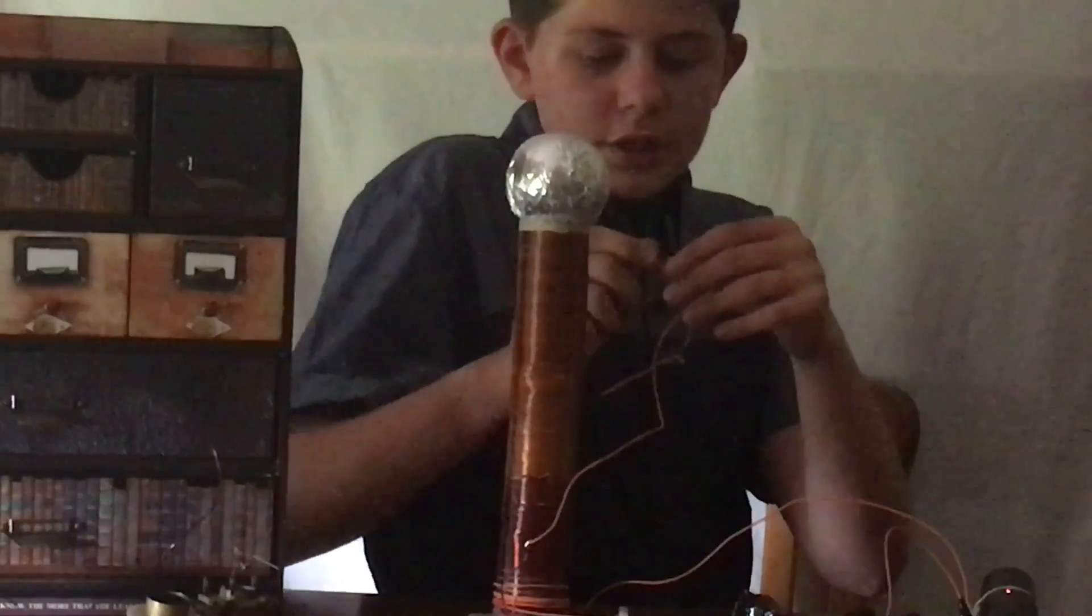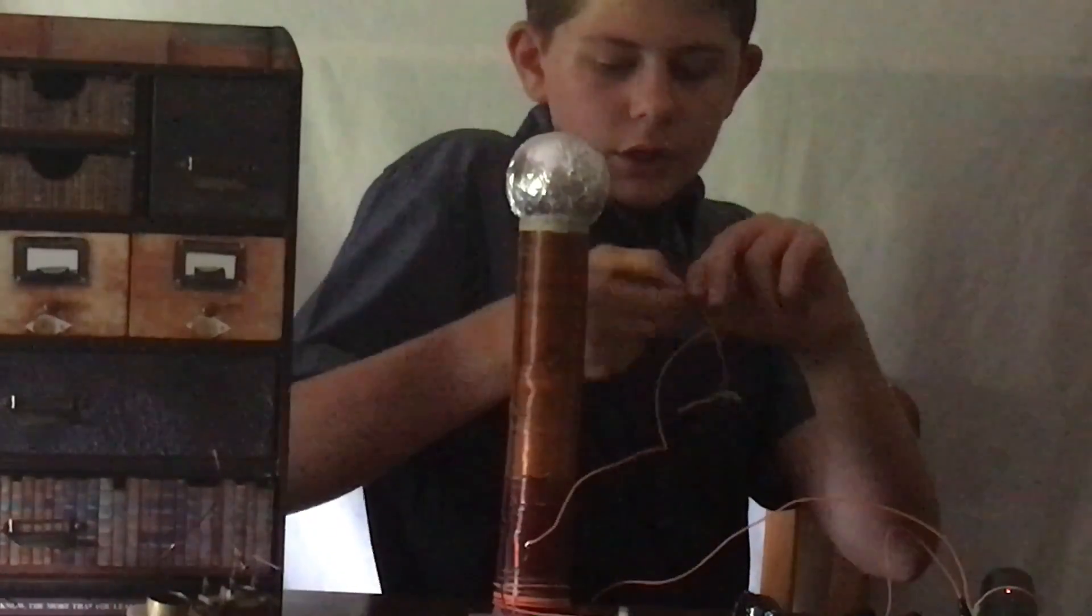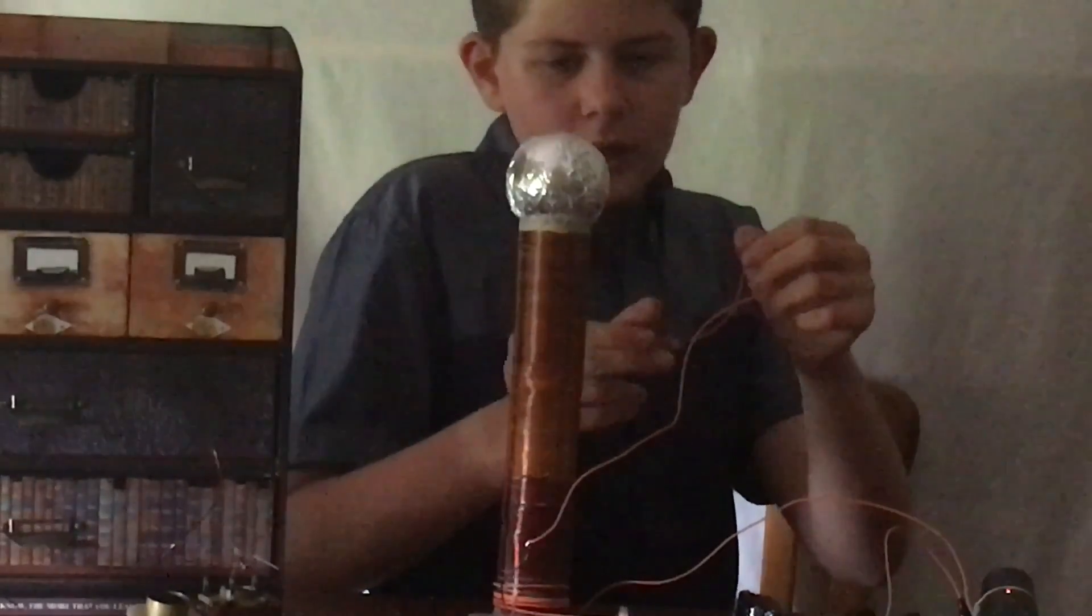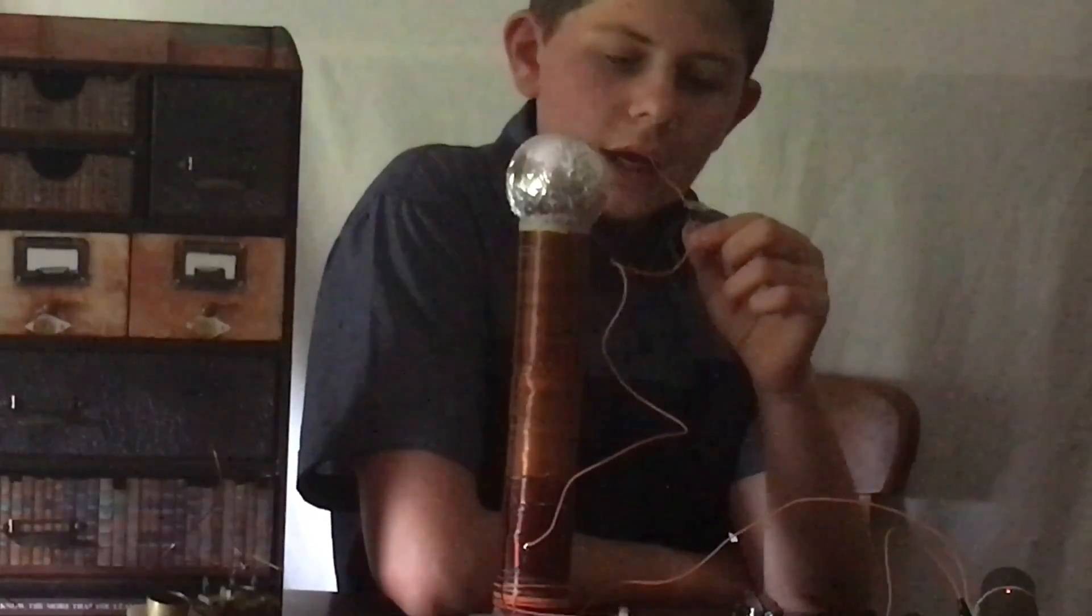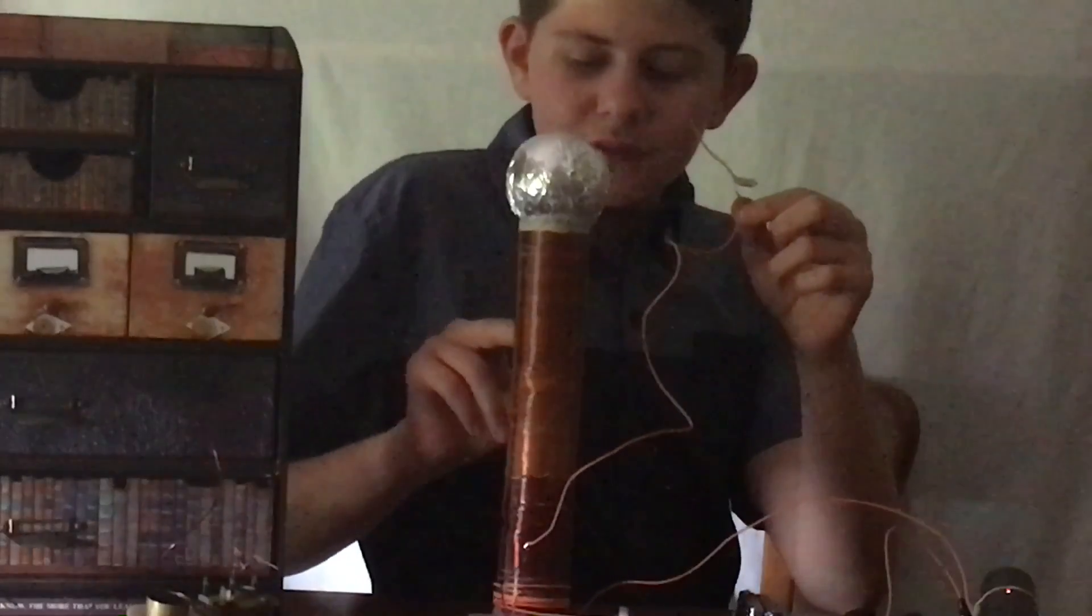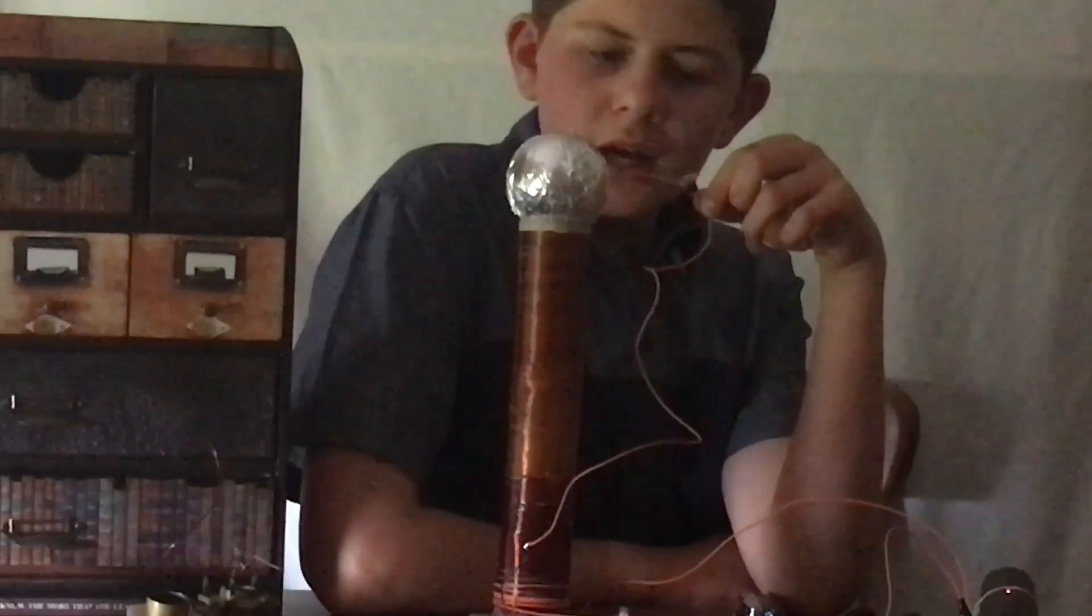Another thing you can do is if you have a little neon bulb like this one, you can twist it to the ground wire like this and touch it nearby. And at the moment, if you look closely, you can see the neon bulb lighting up, even though it's not even touching the top of the Tesla coil. If you look here, it lights up quite brightly.